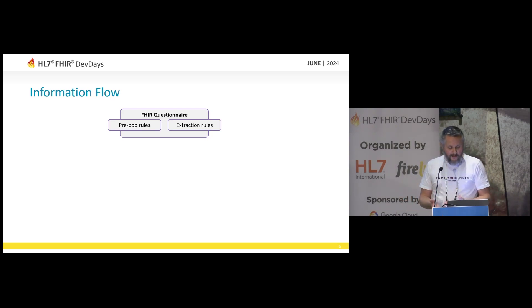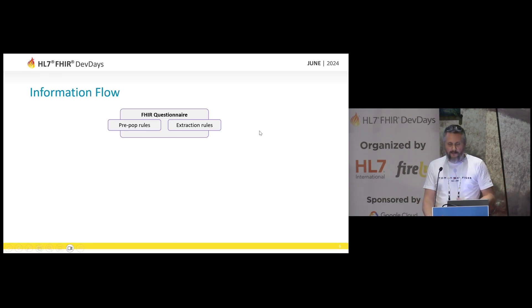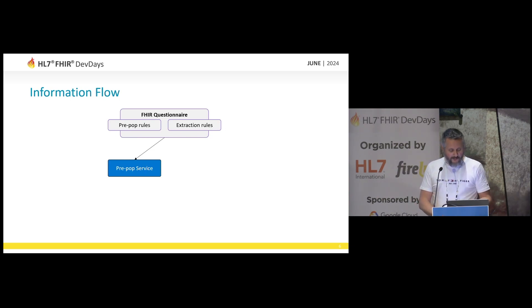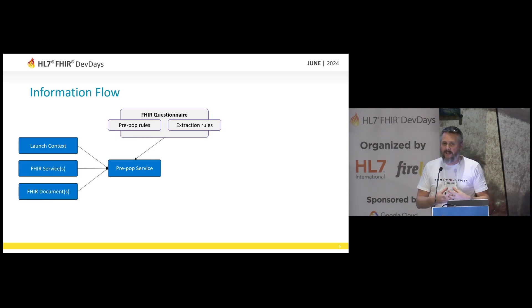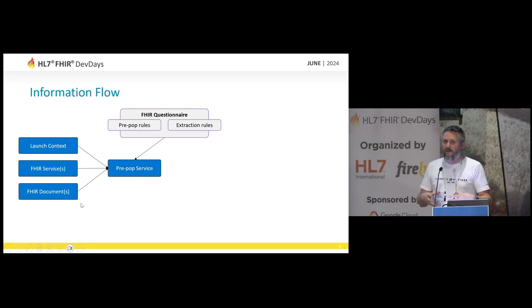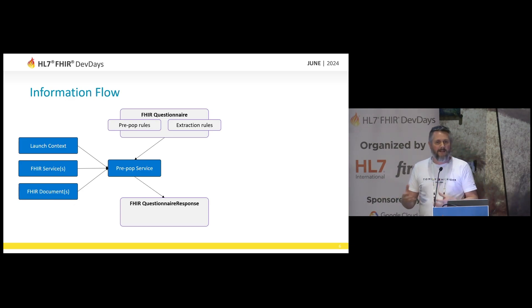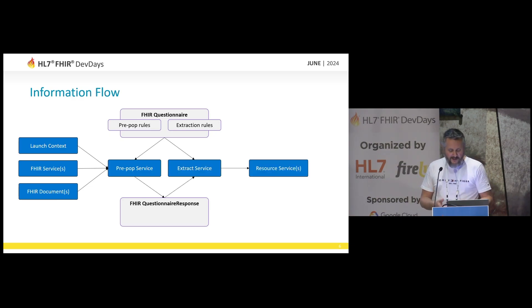Where does the information flow? We start off with that questionnaire, which has inside it some pre-population rules. Depending on which method you want to apply, they can be embedded within. There are also extraction rules on the other side. They all fall within the definition, so when we ship that around it's easier to contain them. We can pass those to a pre-population service, which can pull out of the launch context — who's the patient and practitioner — and also from FHIR services or FHIR documents to get that content into the form and do that pre-population, which spits out a questionnaire response. Then we can leverage that questionnaire along with the response and an extract service to produce some content.